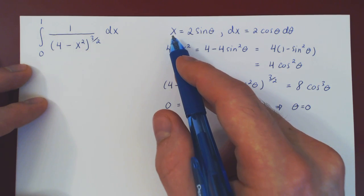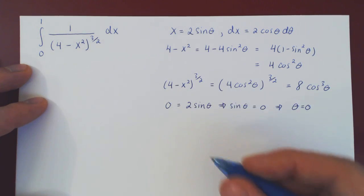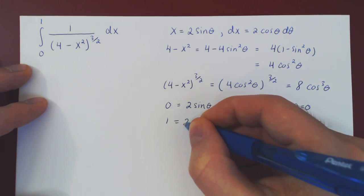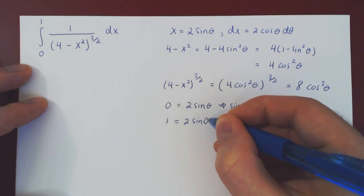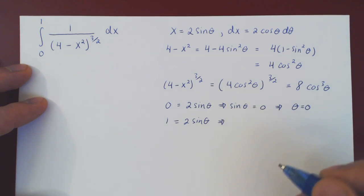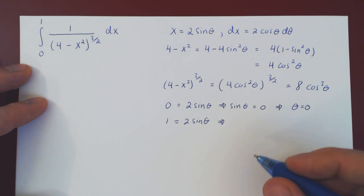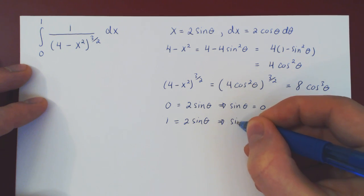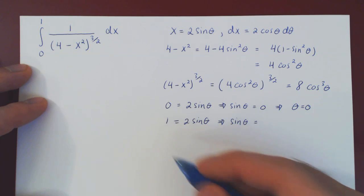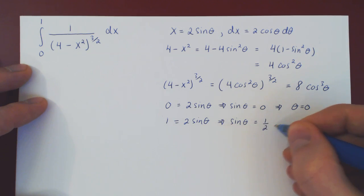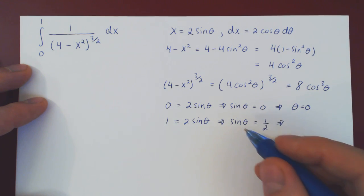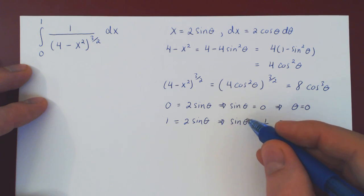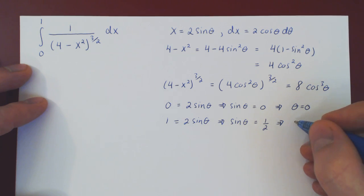What about when x is 1? Then we'll have 1 equals 2 sin theta, divide by 2 on both sides, and you'll have that sin of theta equals 1 over 2, and if you recall, sin is 1 half when the angle is pi over 6. So theta is pi over 6 now.